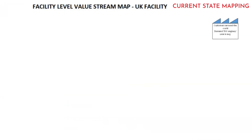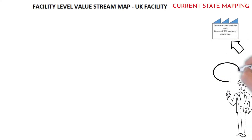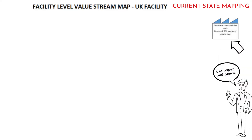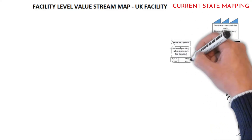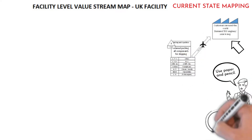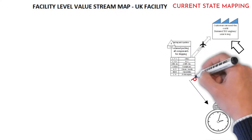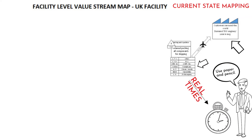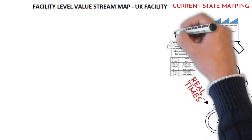Understand customer requirements prior to visiting the process. Visit mapped processes with paper and pencil so everyone on the team can see the connection between reality and the drawn picture. Map the present state of the chosen product family. Use a stopwatch and rely on real times.